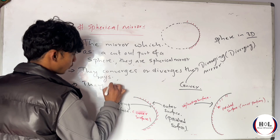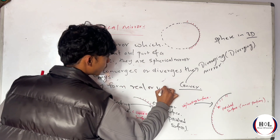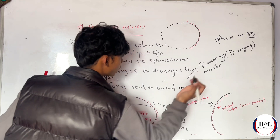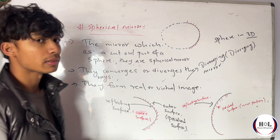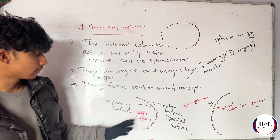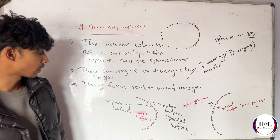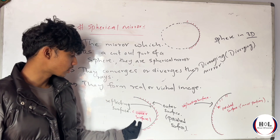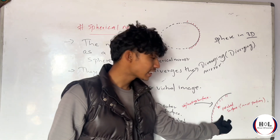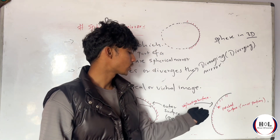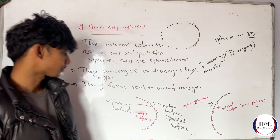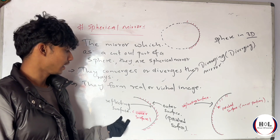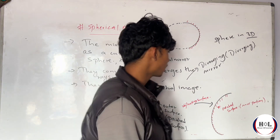So all the concave or convex mirrors form real or virtual images. The concave is the reflecting surface on the inner polar surface, and convex is the outer polar surface. Concave is converging, and convex is diverging.